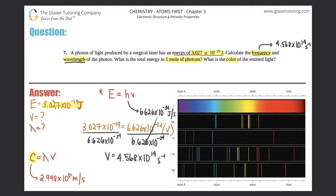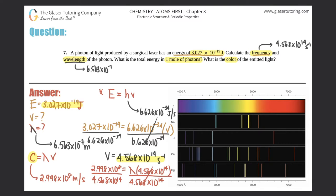So C equals wavelength times frequency. 2.998 times 10 to the 8th equals wavelength times the frequency we just found, 4.568 times 10 to the 14th. Divide both sides by 4.568 times 10 to the 14th. Wavelength equals 2.998 times 10 to the 8th divided by 4.568 times 10 to the 14th. I get 6.563 times 10 to the negative 7th meters.